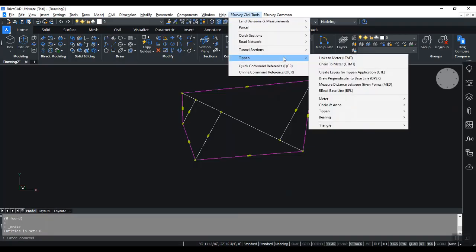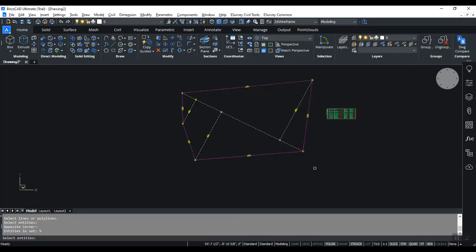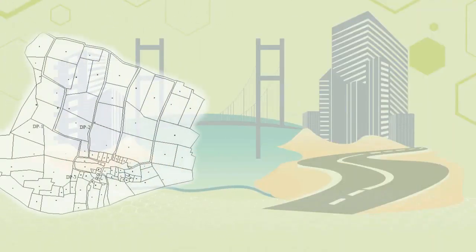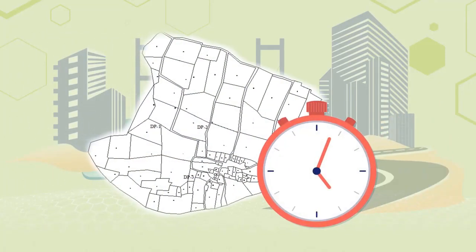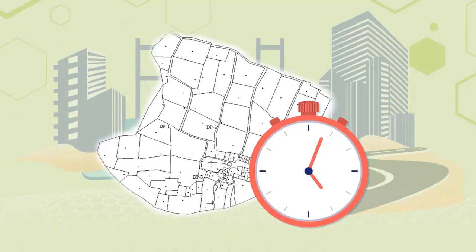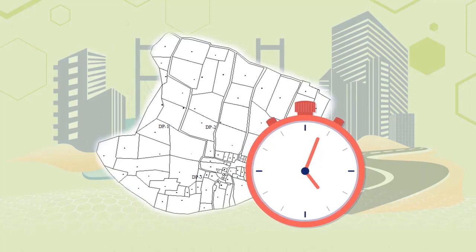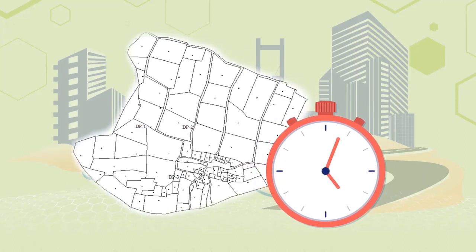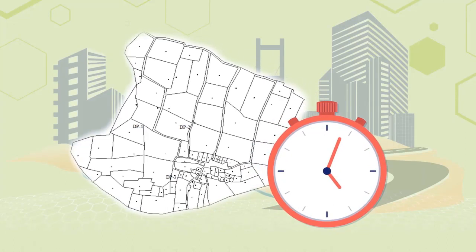Dimension ladder entities and boundaries along with the area. You can get the dimensions in both acres, guntas, and the metric system. Create base triangle and sub-triangle and generate the TIPPAN map. This simple module saves considerable time in drawing TIPPAN diagrams by providing various features in a single tool. Thank you for watching this video.